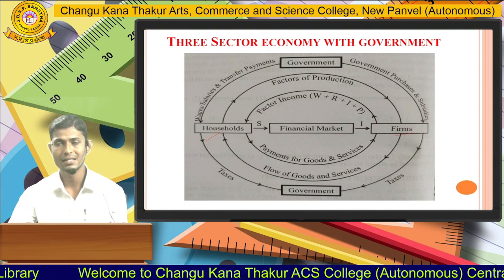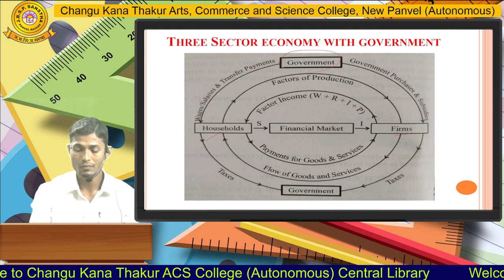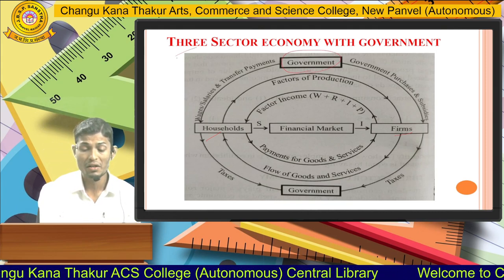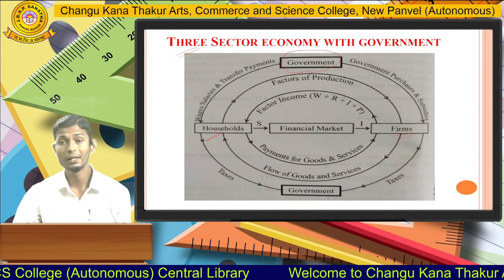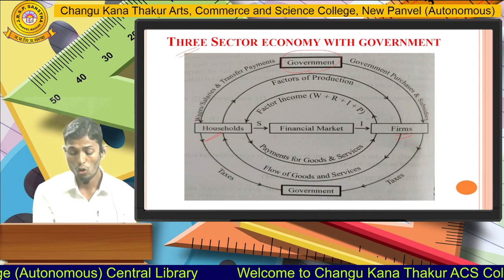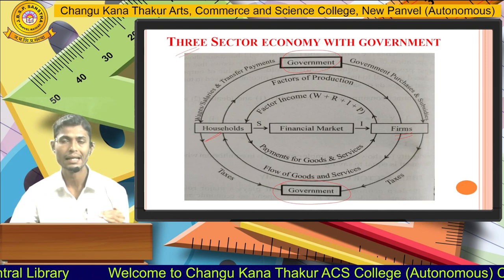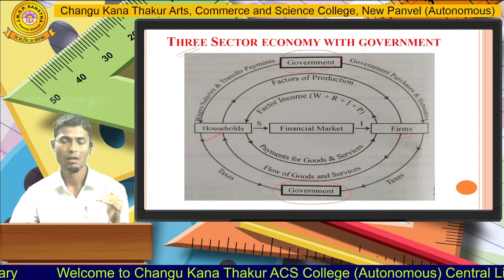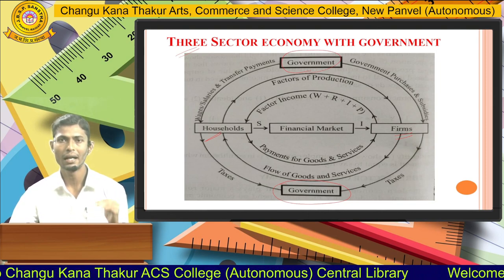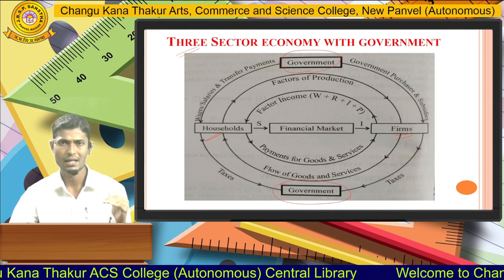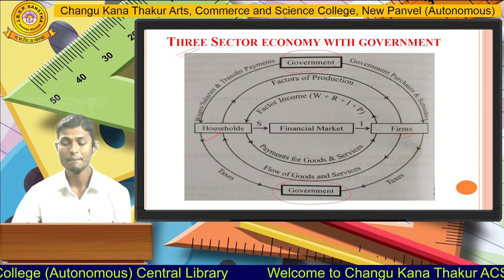So household and firms remain the same, and one more player is added — the government. That is why it is called a three-sector model, because in the previous model we had only two players: households and firms. Here we add the government, which is divided into three layers: the central government for the entire nation, different state governments, and local bodies such as municipal corporations and gram panchayats.